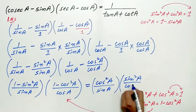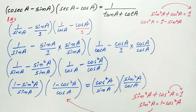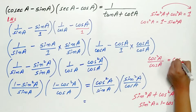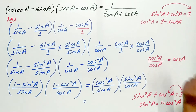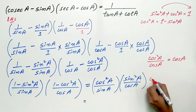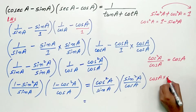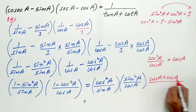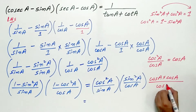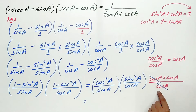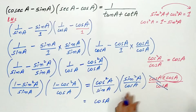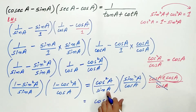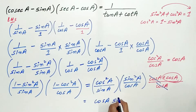We now have (cos²A / sin A) multiplied by (sin²A / cos A). Cos²A divided by cos A: write cos²A as cos A times cos A divided by cos A — cancel one cos A, leaving cos A. Similarly sin²A divided by sin A simplifies to sin A. So the left hand side equals cos A times sin A.